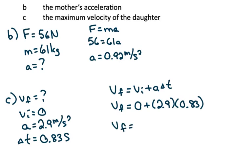Working that out, again, we need two sig figs. The daughter's maximum velocity would be 2.4 meters per second.